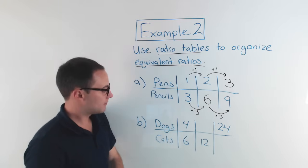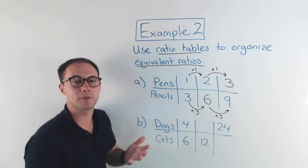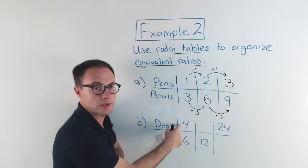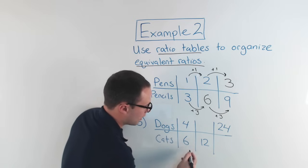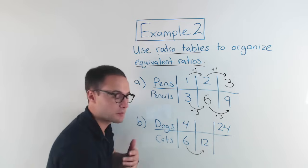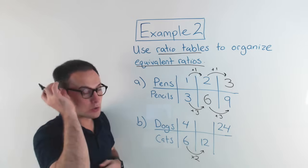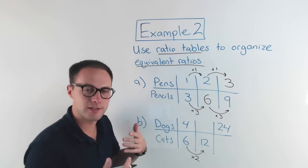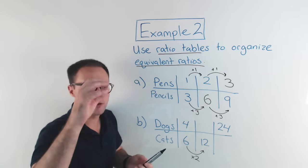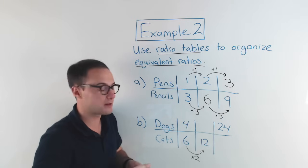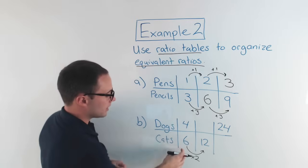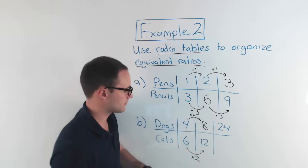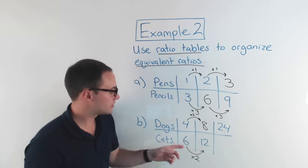But for part B, there's another way we could do it — we could also use multiplication or division. For every four dogs, there are six cats, so the ratio is four to six. From six to twelve, I can use multiplication — multiply by two. If I'm using multiplication or division, I do the same thing to both, just like with fractions. So four times two gives me eight. Eight to twelve is equivalent to four to six.